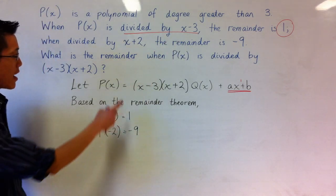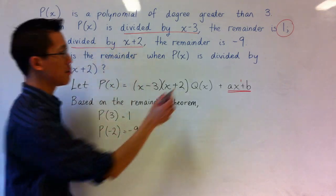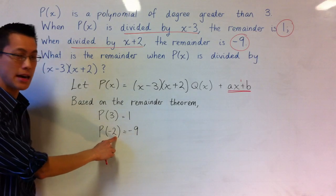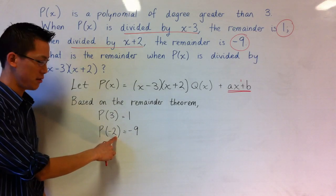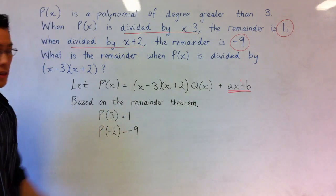And in the same way when divided by x plus 2 the remainder is minus 9. So that's where this statement comes from. Minus 2 being the zero of x plus 2. So P(-2) is equal to minus 9, the remainder that they gave us earlier.